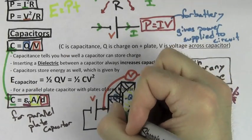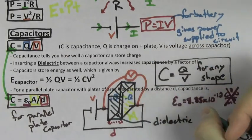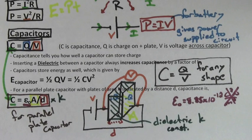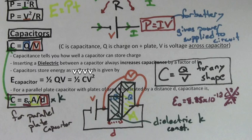If you fill the capacitor with a dielectric, it will always increase the capacitance by a factor of K, the dielectric constant. Note that this K is different from the 9 times 10 to the 9th K. The energy stored inside of a capacitor is given by one-half Q times V, where Q is the charge on the capacitor and V is the voltage drop across the capacitor. You can also find the energy by using one-half C V squared — you know the V is squared because you can see the V squared.